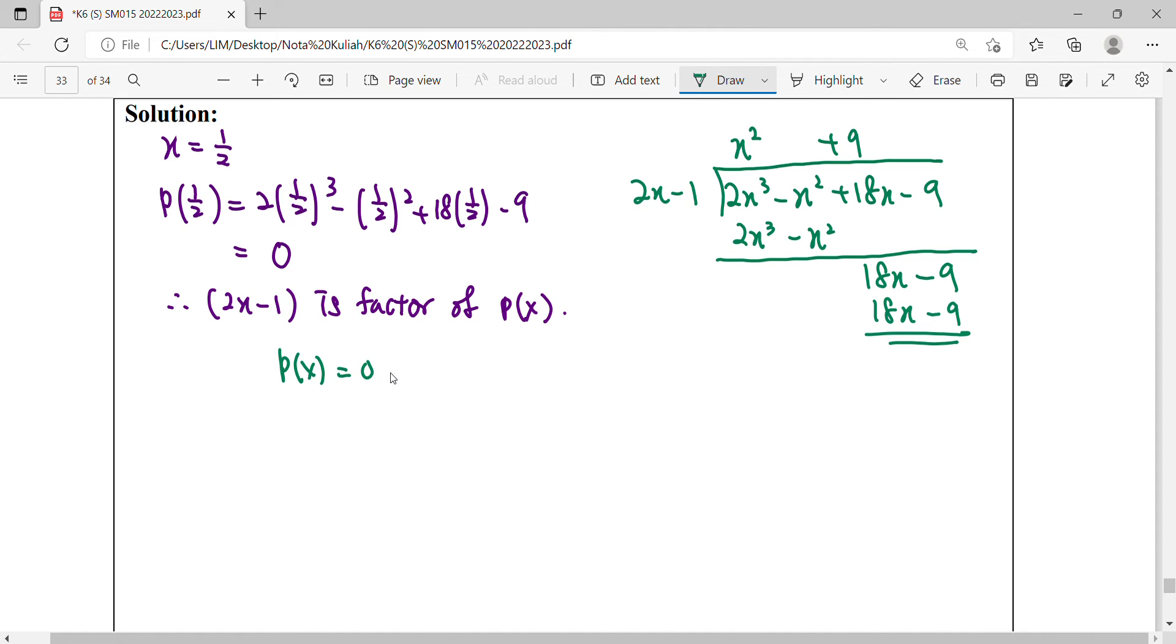For our polynomial here, we can write one factor is 2x minus 1, and the result is x squared plus 9. Solve this equals to 0. For the quadratic part here, we can check with the calculator if we can still factorize further.